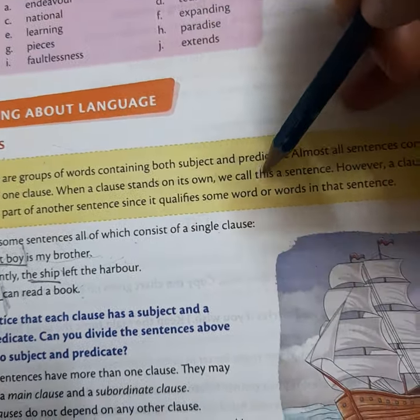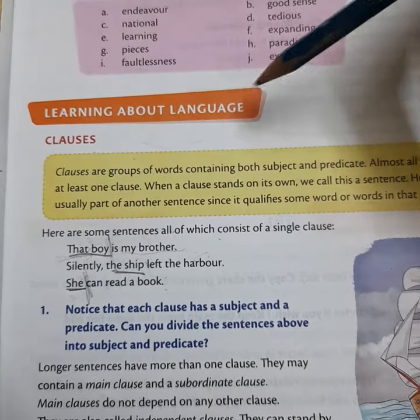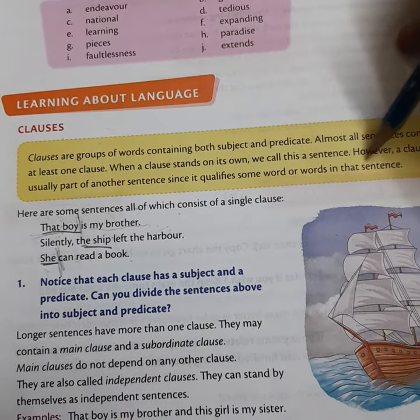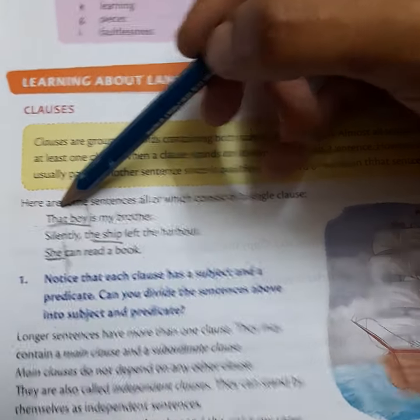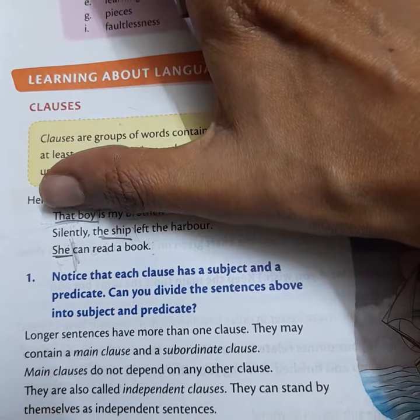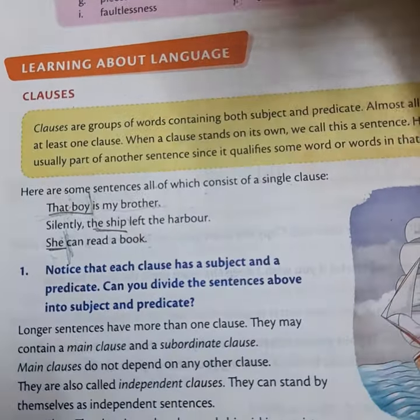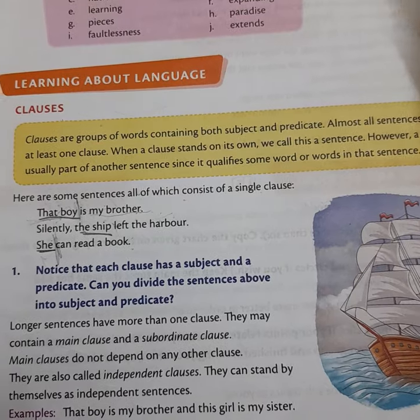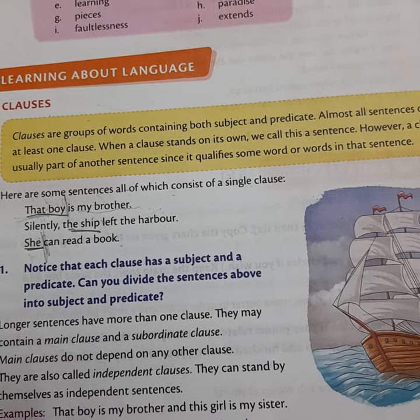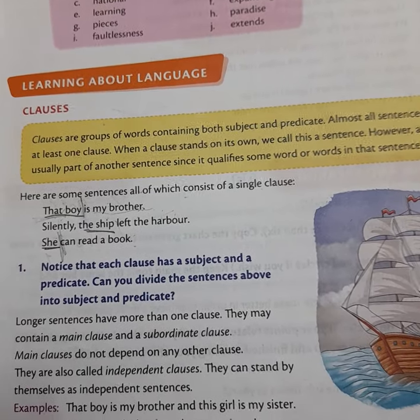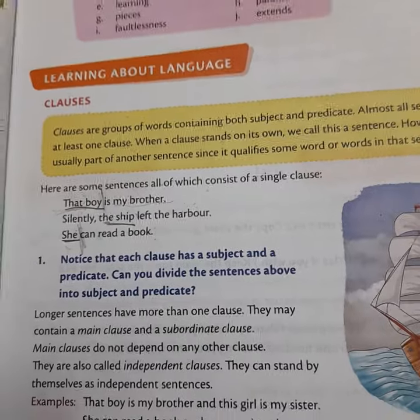When a clause stands on its own, we call it a sentence. However, a clause is usually part of another sentence since it qualifies some words in that sentence. When there is a subject and a predicate in a sentence, we call it a complete sentence.